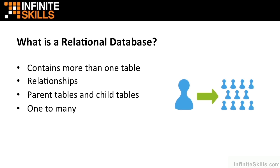We see parents having many children, but you don't see many children having many parents. So that's really the theory behind relational databases. You have multiple tables, those tables are related, they could be related on a parent-to-child basis, and nine times out of ten they are related on a one-to-many basis.